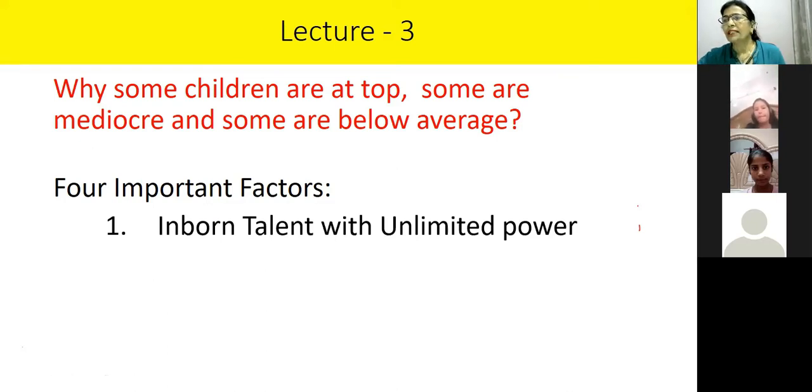Class mein hoota hai na ki kuch bachche bhot hi hameseh first aareha hai. Kuch medium hai ki bas kabhi achhe number se paas ho ga hai, kabhi thodha 60 aareha, kabhi 70 aareha, kabhi 80 aareha, right? Aur kuch below average hoota hai, ki jinnhe paas bhi hona bada muskil sa hota hai. But why it happens as all children have the unlimited power. All children have the unlimited power. Then why it happens with us? So in my opinion, friends, there are four factors.